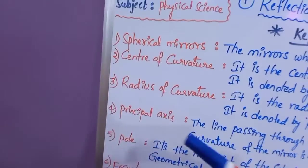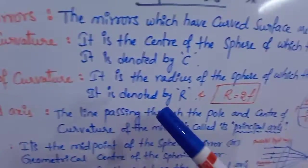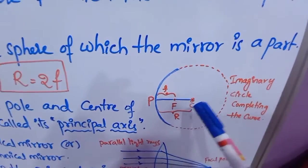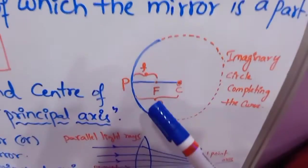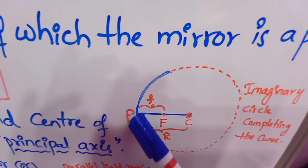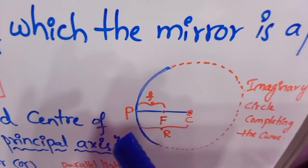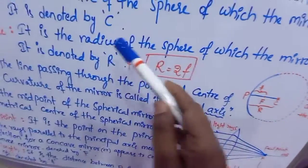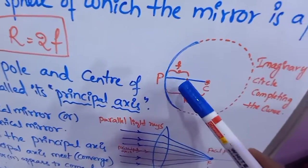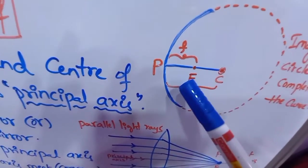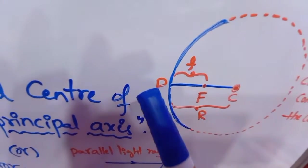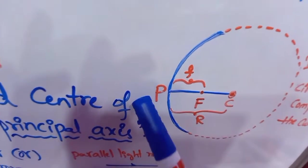Next: radius of curvature. It is the radius of the sphere of which the mirror is a part. In this sphere, the radius goes from one point to another point across the sphere. The radius of curvature is denoted by R. For simple understanding, we can also say that the radius of curvature is the distance between the pole and the center of curvature.